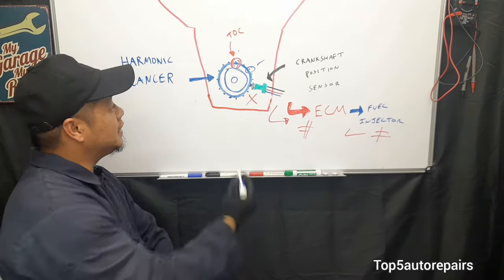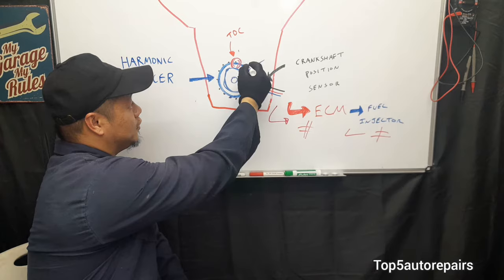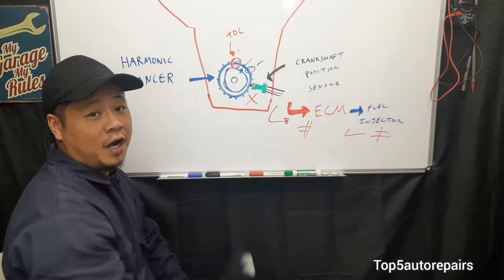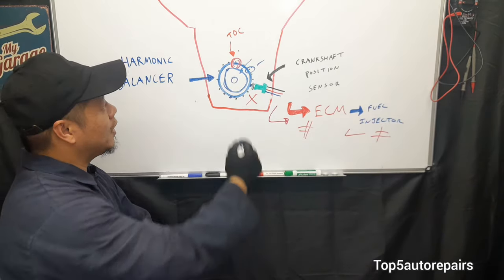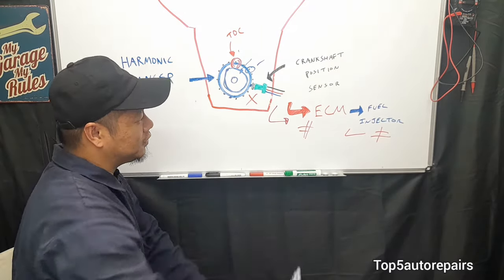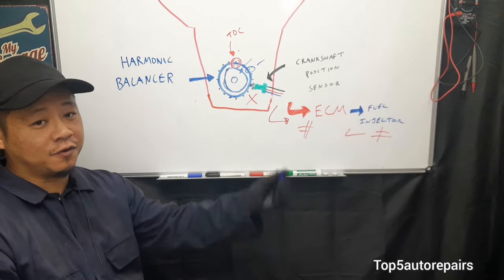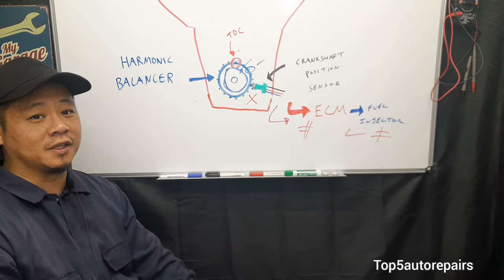Another possibility is that since most harmonic balancers come with these rings, let's say this ring starts to fail and comes out of place. When it comes out of place, it can throw the whole timing off, sending improper signal to the ECM, and the ECM can't send proper signal to the fuel injector, therefore causing that stalling or intermittent stalling.